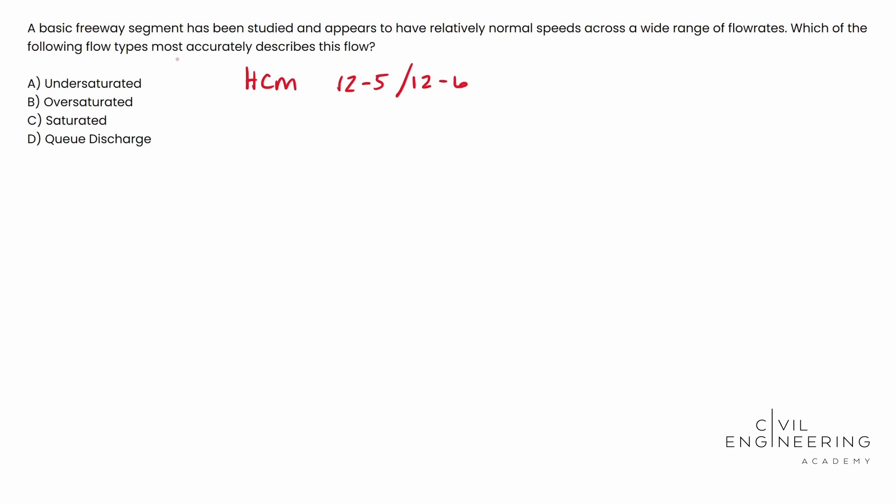So think about this. They can ask you so many things about this little blurb right here. They can ask you which of the following types is considered congested, oversaturated flow. They can ask you which of the following statements most accurately portrays oversaturated flow or unsaturated flow or Q discharge. They can ask you a ton of stuff. So I encourage you to read through these blurbs, understand what each of them mean.